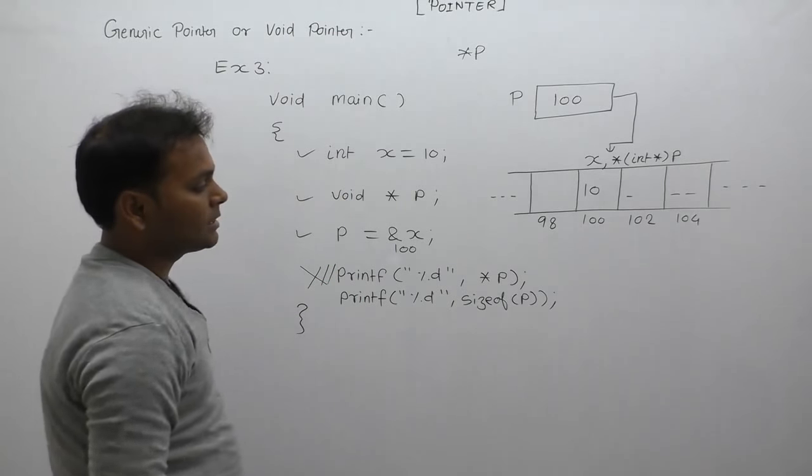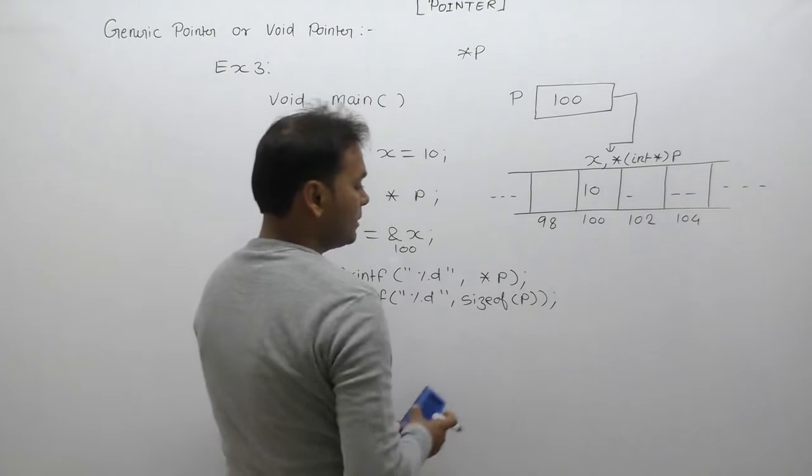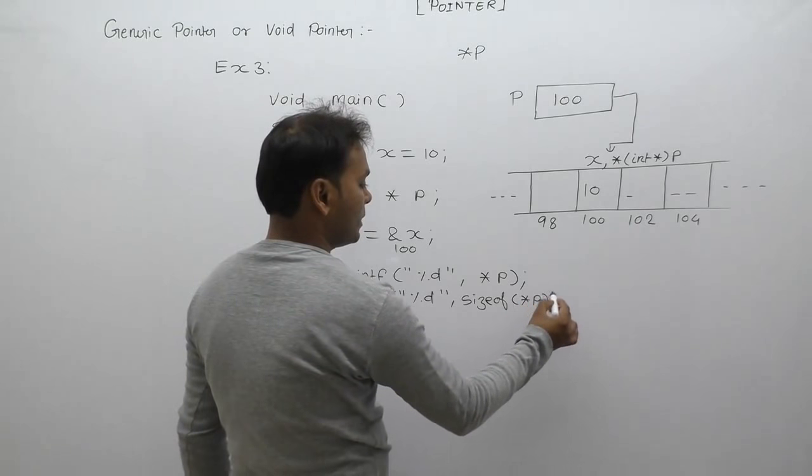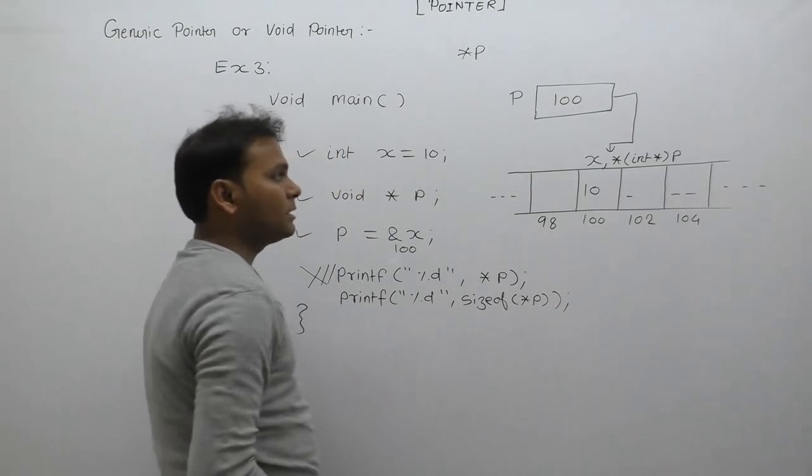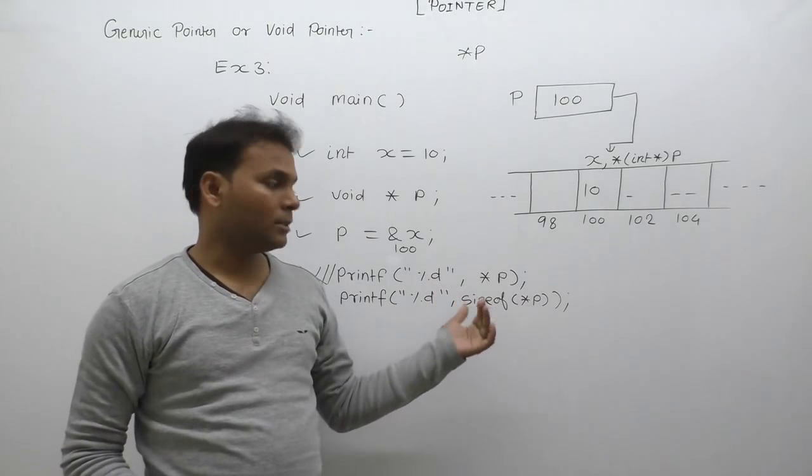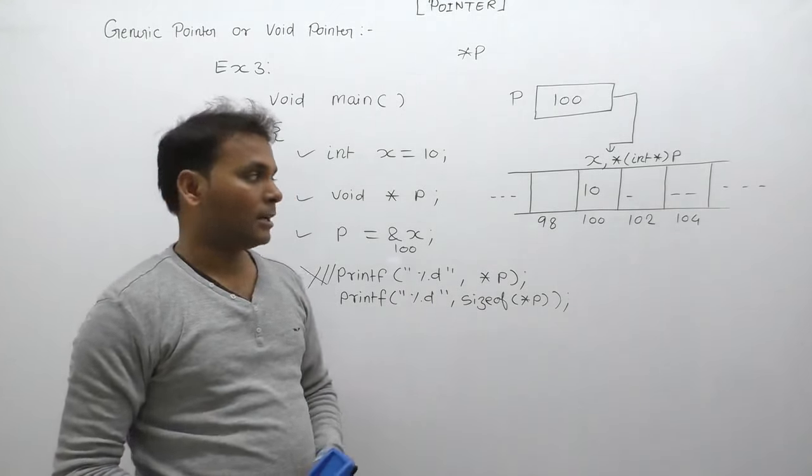Now if we check star p's size, then again it is invalid because star p's size - there is no size available. Inside of star p is zero or unknown, so we get compile-time errors.